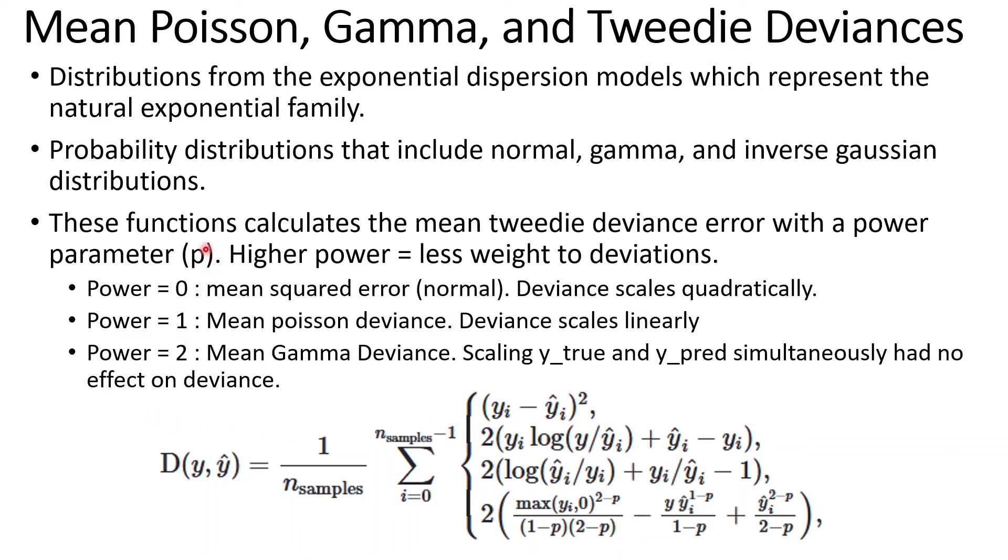And when power, which is this p right here, is equal to 2, it's called the mean gamma deviance. And it just means that scaling the true value and the predictive value simultaneously had no effect on the deviance.